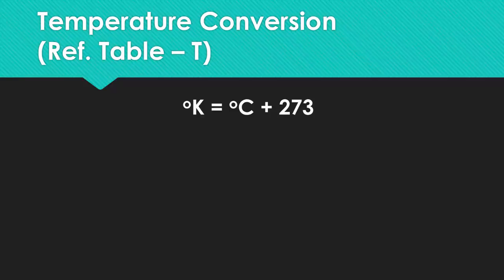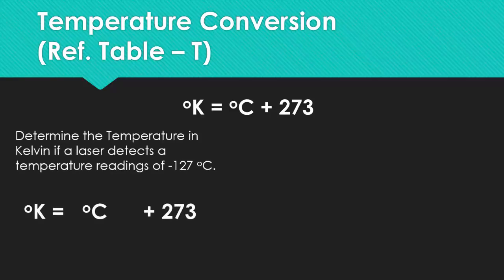On Table T, the last formula you'll see is the temperature conversion: Kelvin equals degrees Celsius plus 273. Example: determine the temperature in Kelvin if a laser detects a reading of negative 127 degrees Celsius. We plug in negative 127 and add 273, giving us 146 Kelvin.